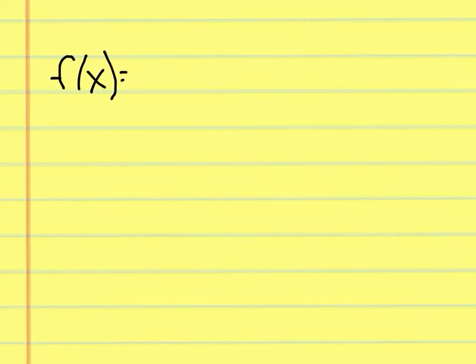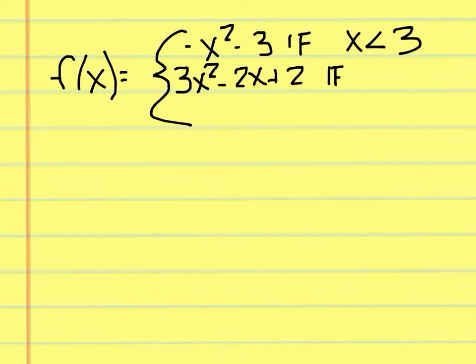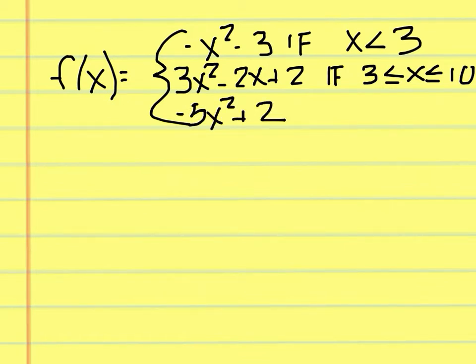Here is another piecewise function. f of x equals negative x squared minus 3 if x is less than 3. And 3x squared minus 2x plus 2 if x is between 3 and 10. Also negative 5x squared plus 2x if x is greater than 10.